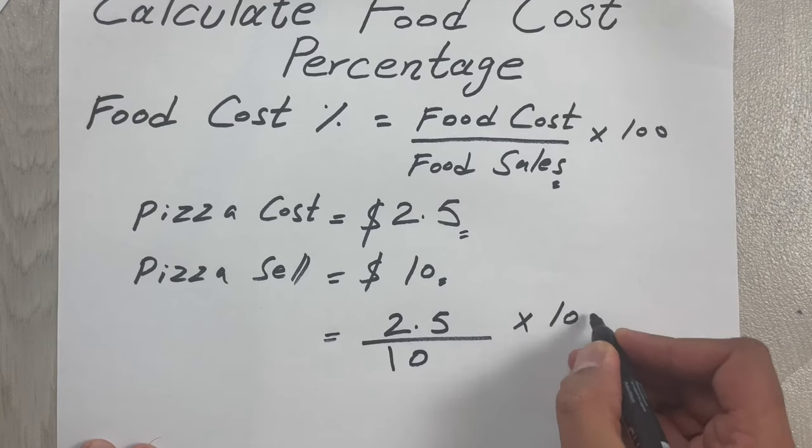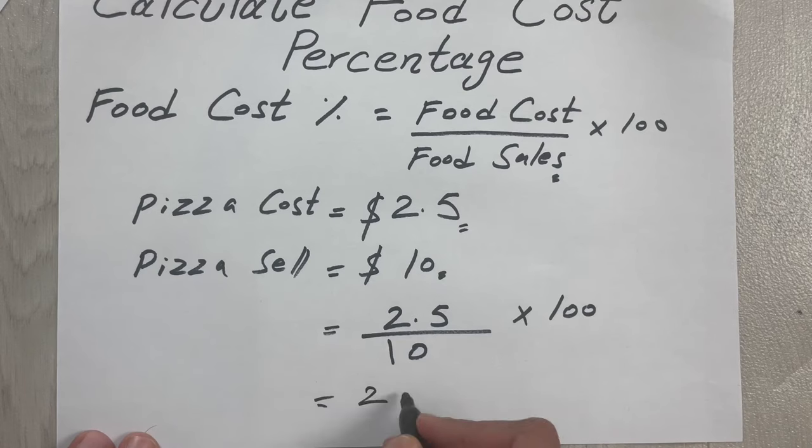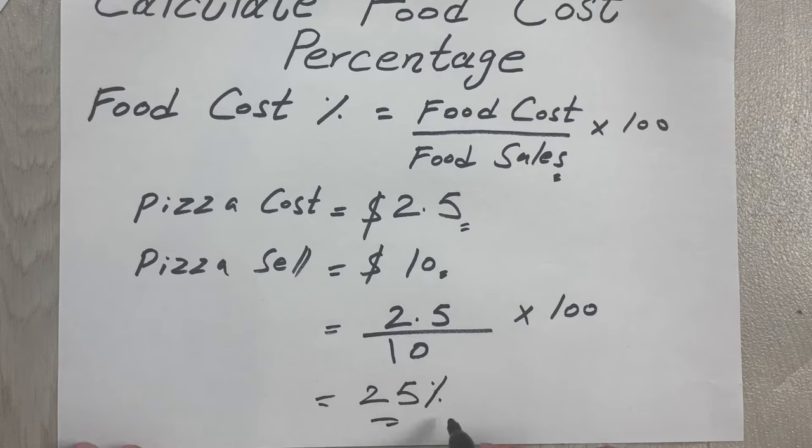When we do this calculation our answer will be 25%. This is our food cost percentage. This means that 25% of the selling price will be allocated to the food cost.